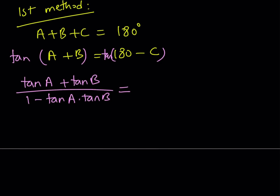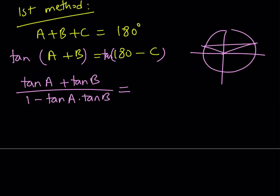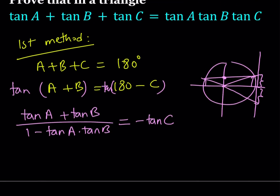Now, how can we simplify the right-hand side? You can use a difference formula, but that's not needed. If you think about an acute angle C — and even if C isn't acute, this is going to be true — if you take its supplement, they will have opposite tangents, because their cosine values are going to be opposites and their sine values are going to be the same. So instead of tangent of (180 minus C), we can easily write negative tangent of C. Now we're going to manipulate this equation, and that's going to give us the identity.